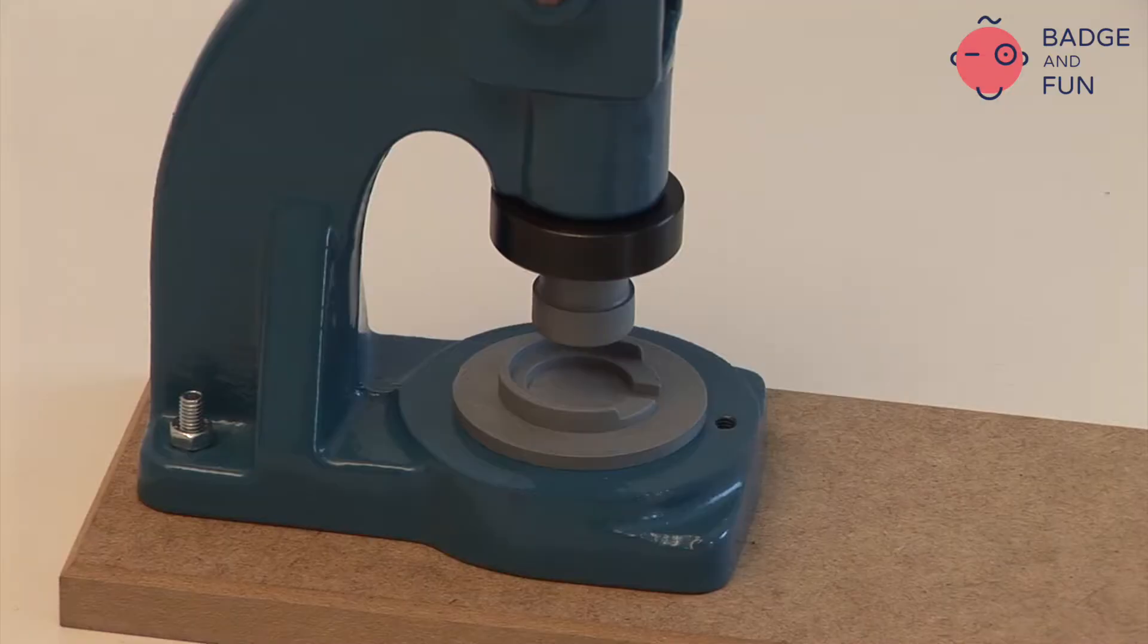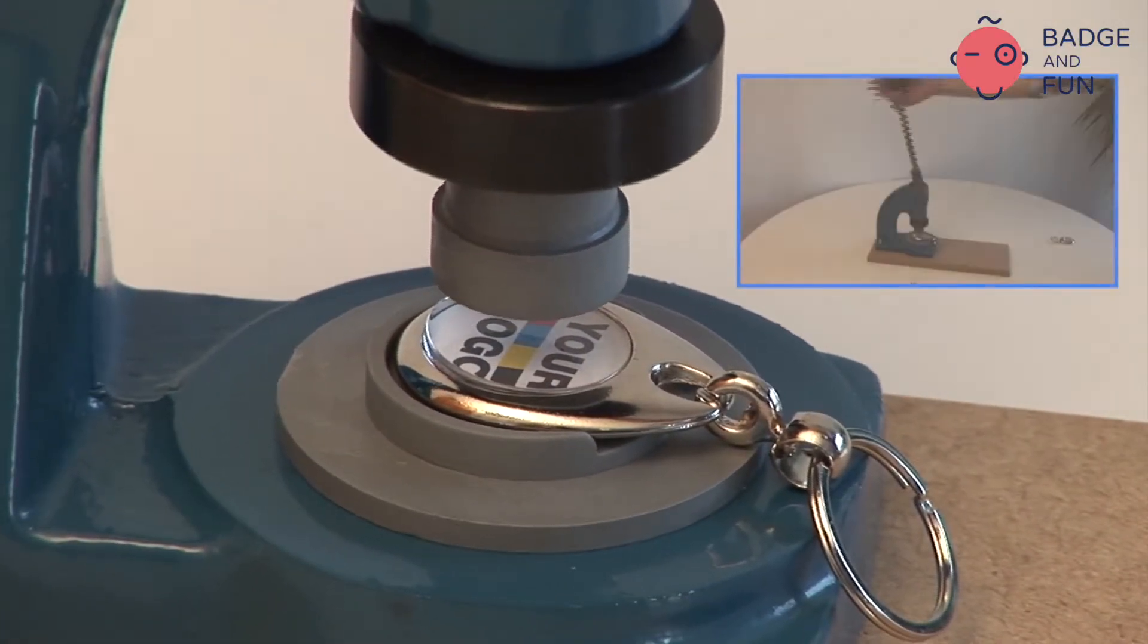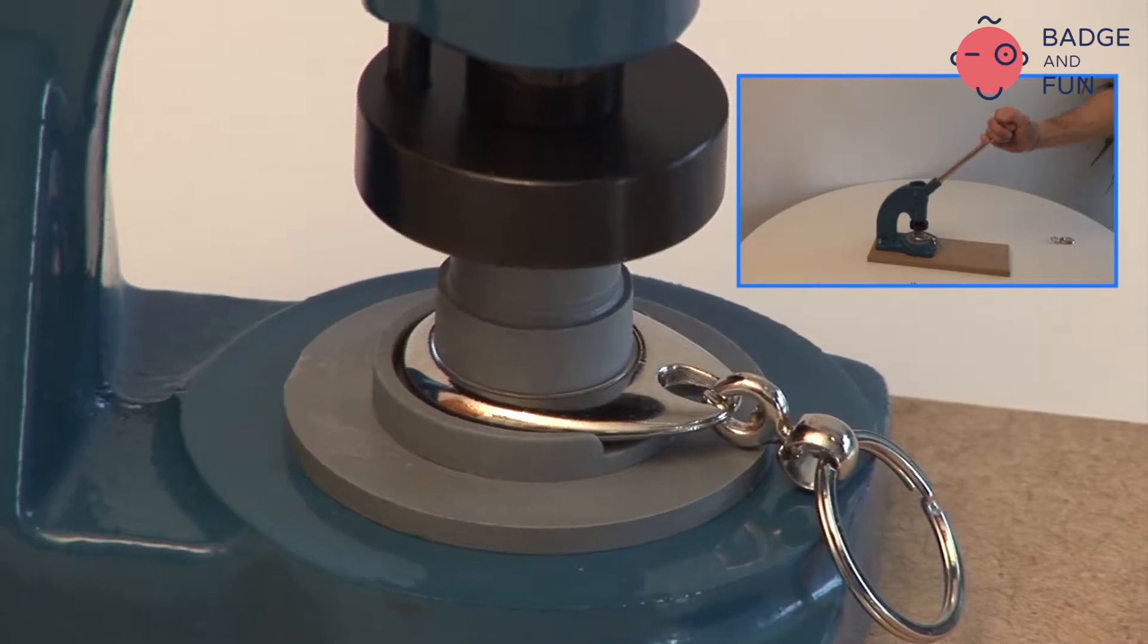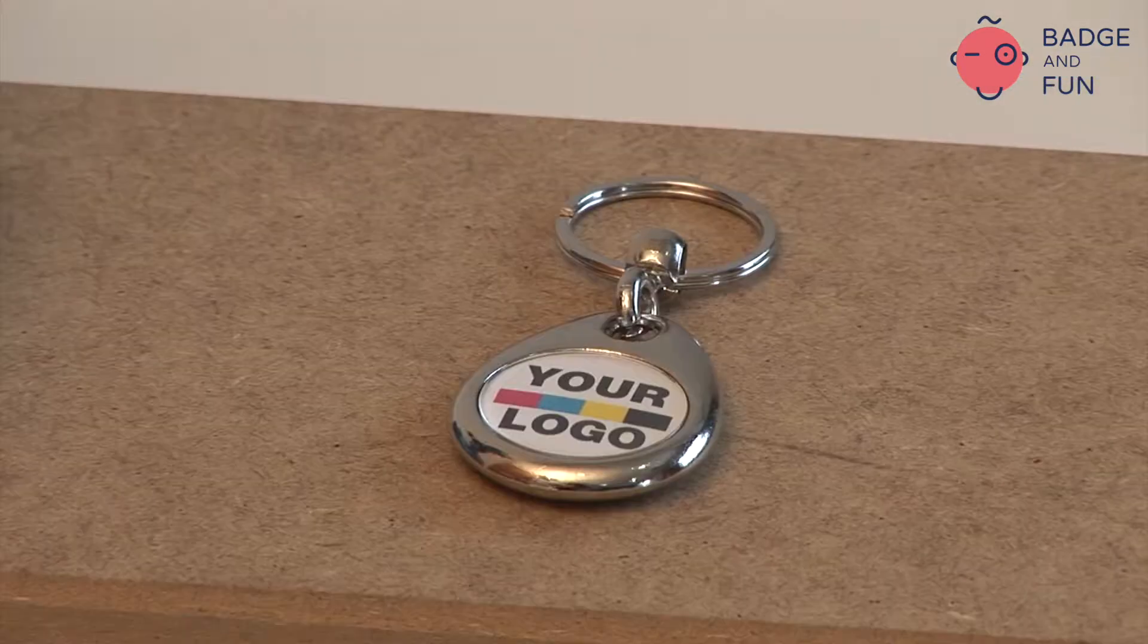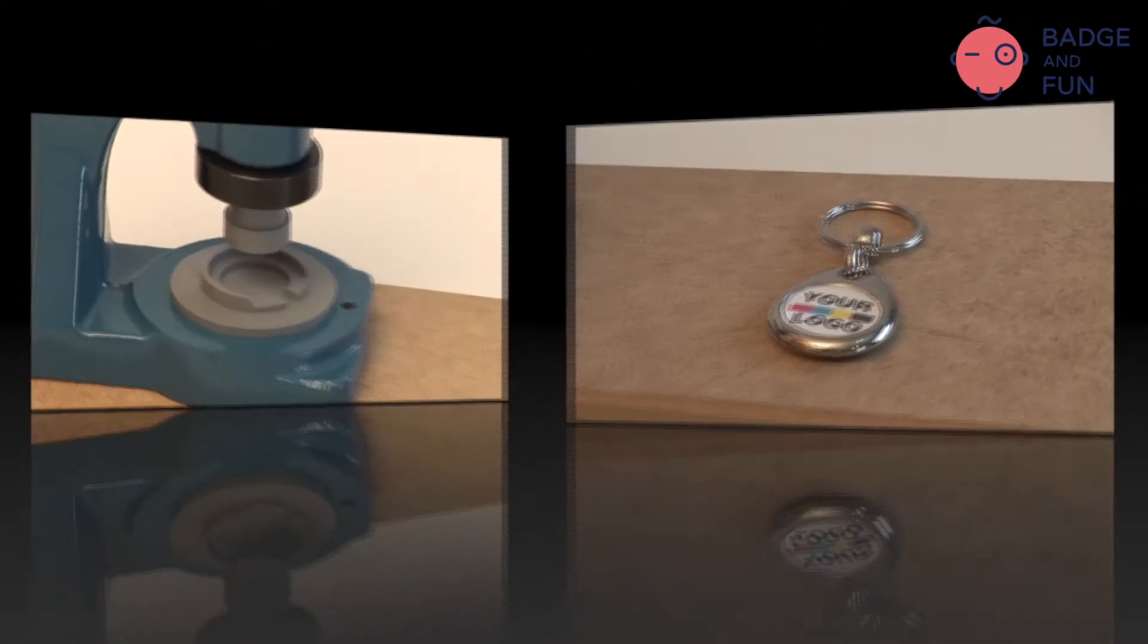Assembling moulds comprise of two parts. The upper part or pusher is fixed on the upper part of the machine. We will secure it with the lateral screw. The assembling base is placed on the base of the machine and here is where the keyring lies while assembling.